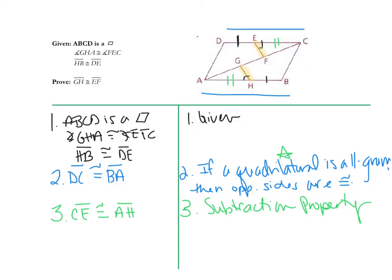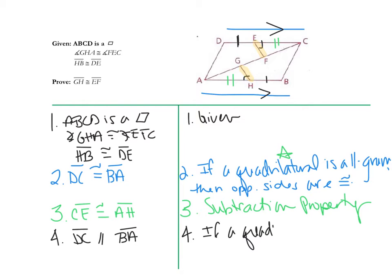We also have a pair of congruent angles given. We need to prove one more thing. There's no additional side information beyond opposite sides congruent and opposite sides parallel, so that should lead you to think we need another pair of angles. With a parallelogram, opposite sides are parallel — DC is parallel to BA. We would say: if a quadrilateral is a parallelogram, then opposite sides are parallel.